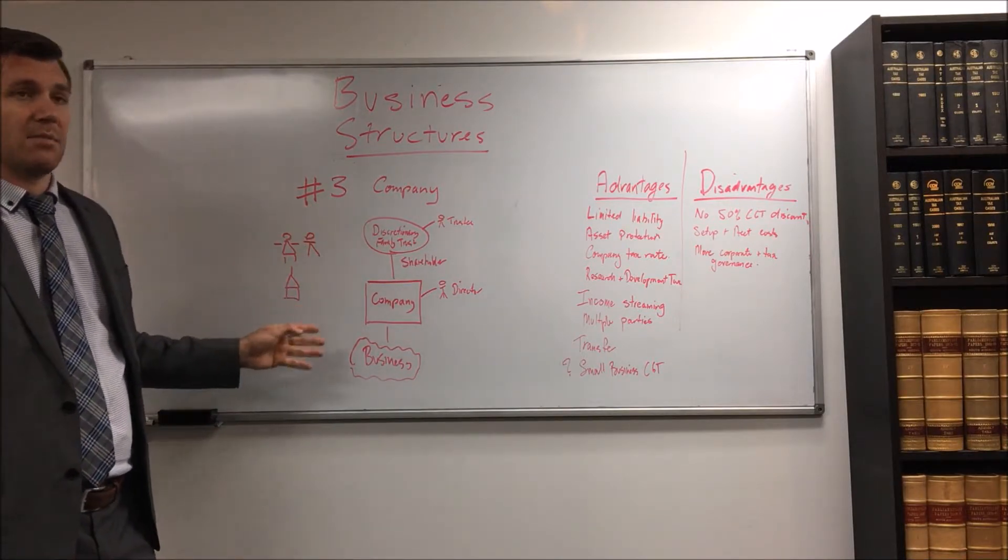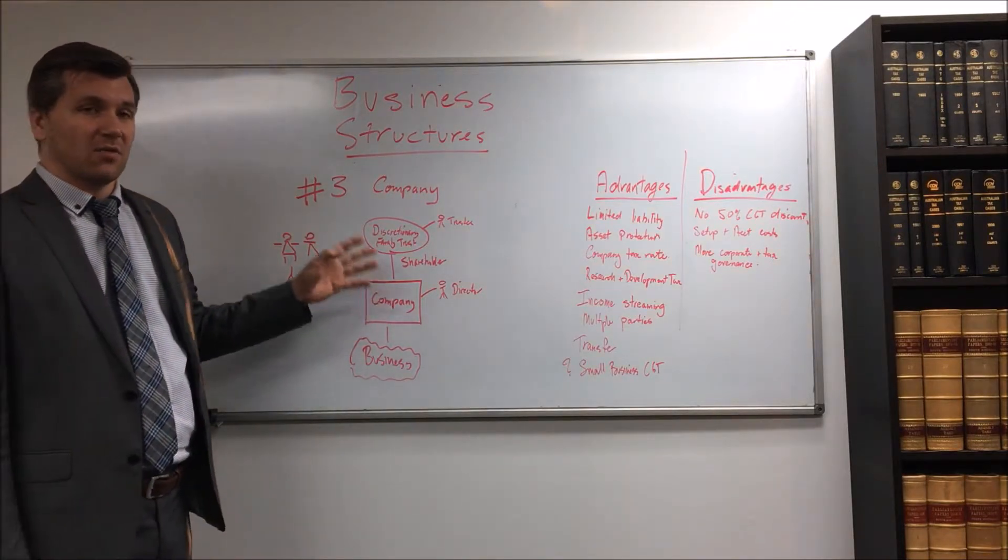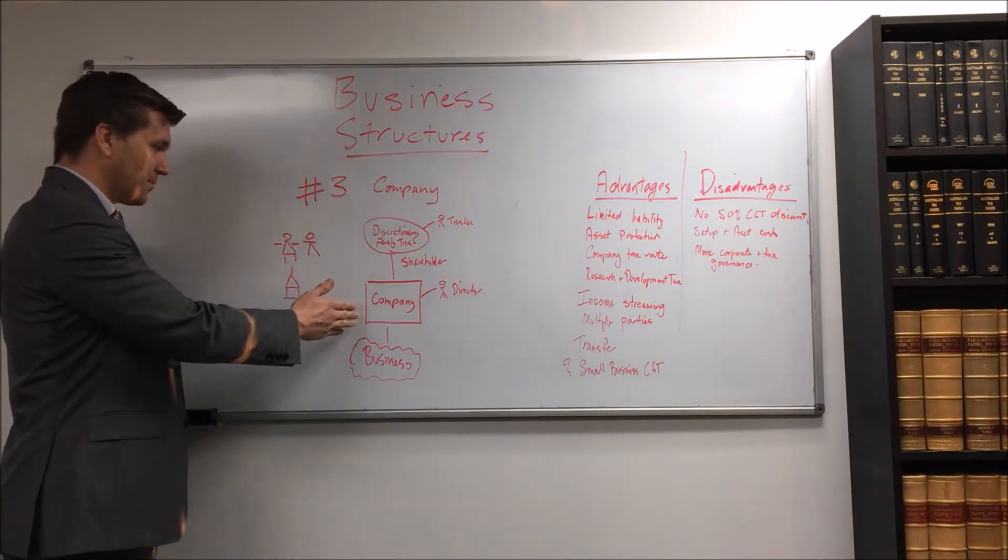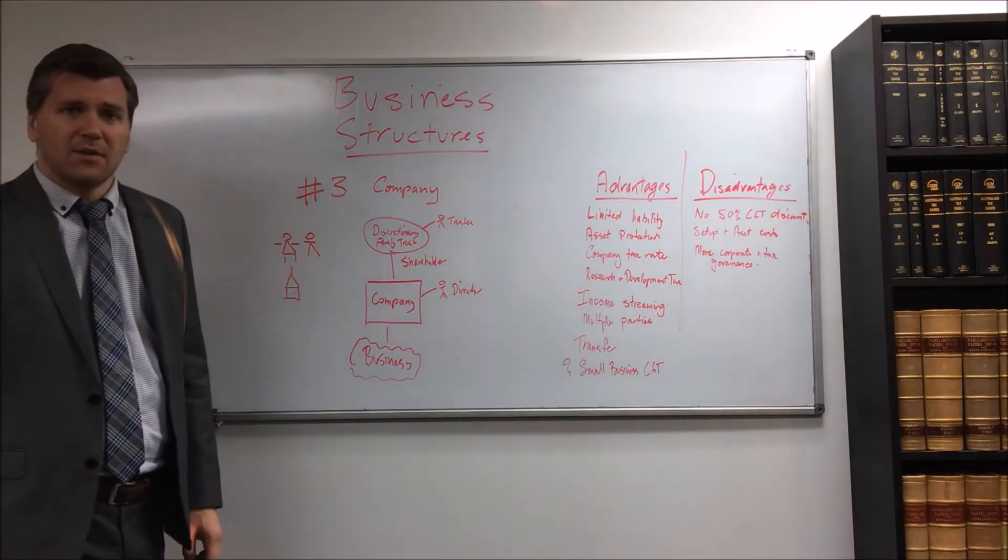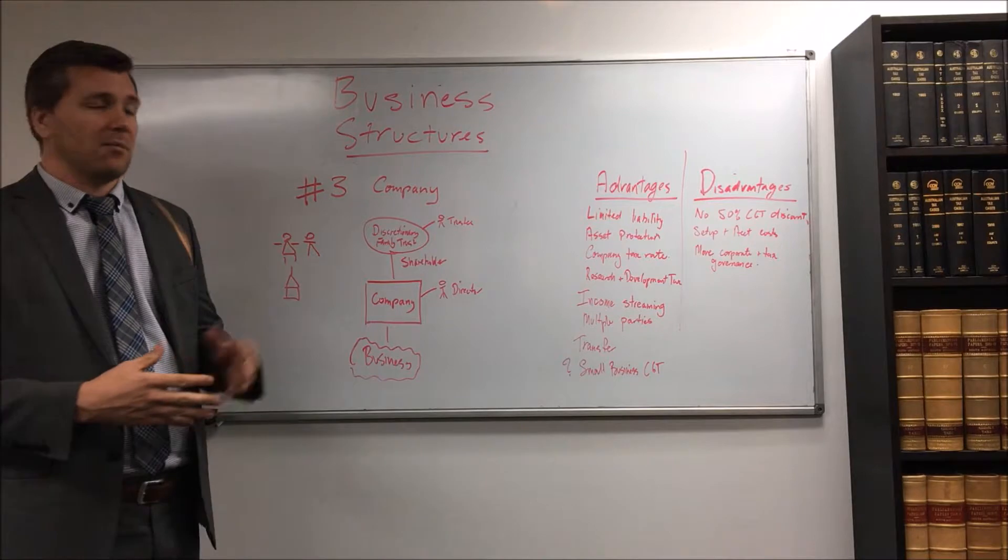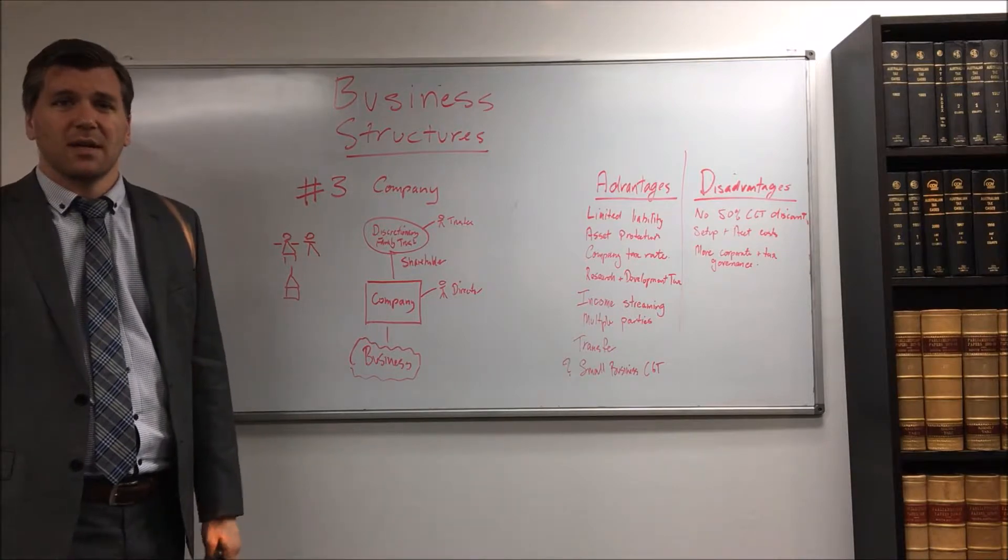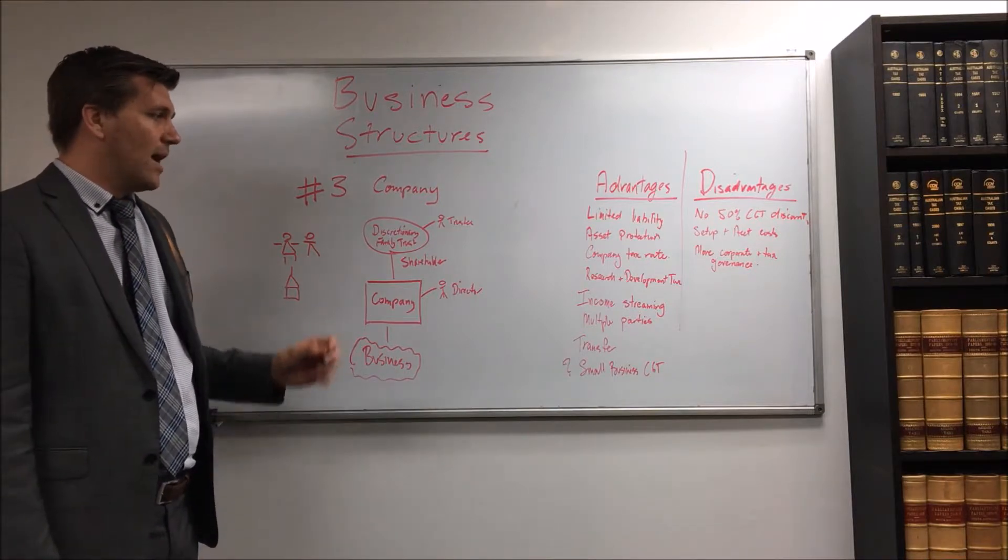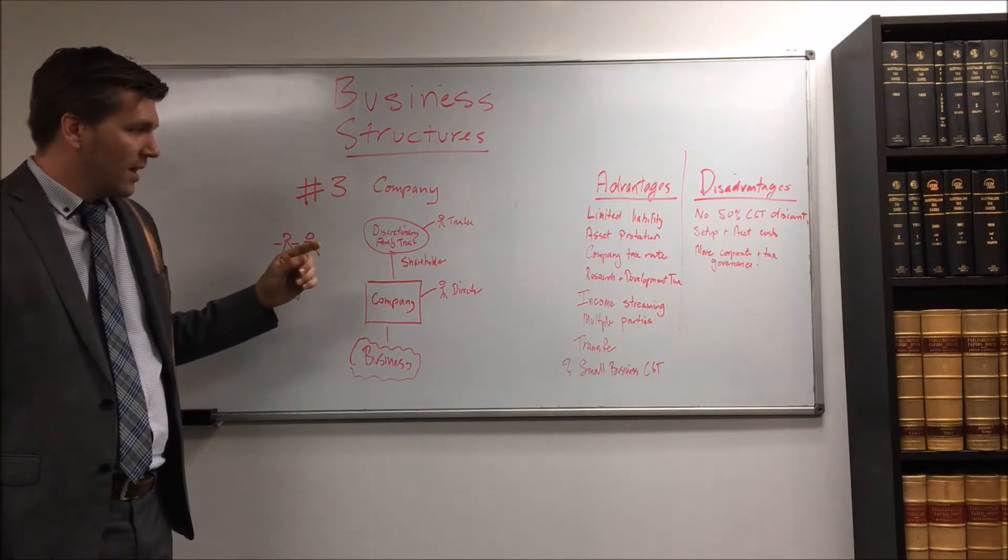You can get income streaming through a company with multiple classes of shares. The default structure is company owned by discretionary trust. So we've got two pieces here. The discretionary trust is the thing that enables you to stream. If your wife is earning great money and you've got a small income in your own name, you're going to want to stream income to you so you pay, well you pay franked dividends, you pay a lower amount of tax. Something your accountant is going to help you decide the end of each year. You don't need to work it out beforehand, but it's an important consideration when you're setting up a structure, income streaming.